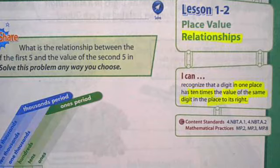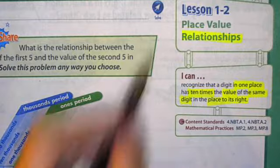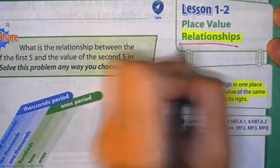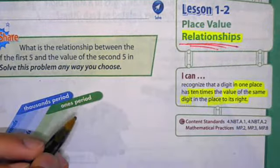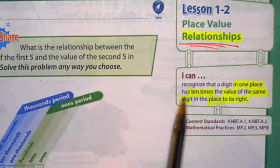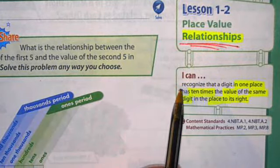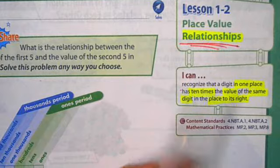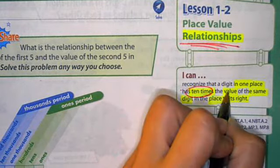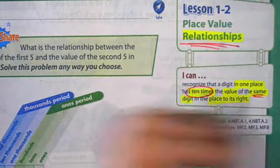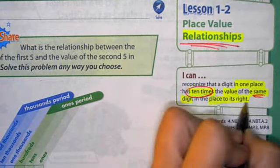Today we are going to be working in the next piece of our learning within place value relationships. Key word in here is relationships, how things are connected. So our objective is recognizing that a digit in one place is 10 times the value of the same, that's the word, same digit in a place to its right.